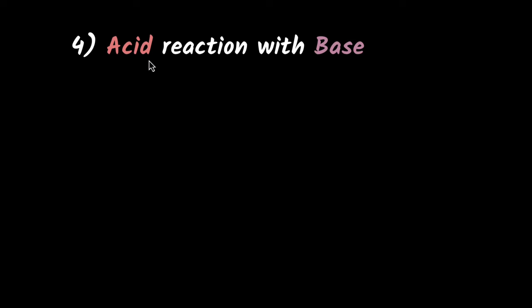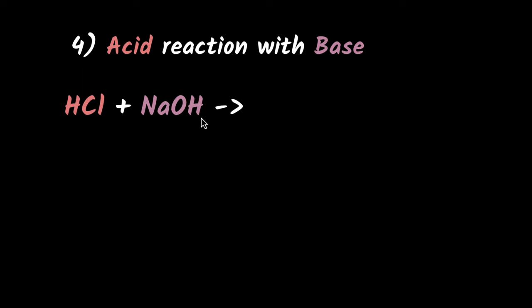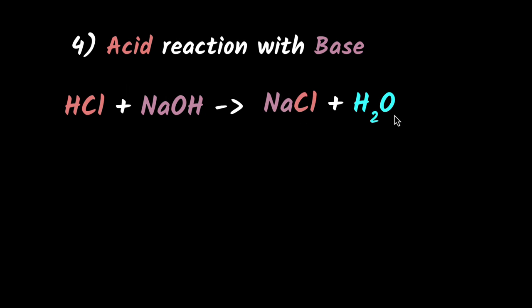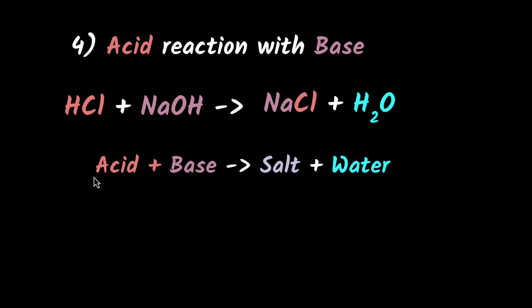That brings us to the fourth and final one: how does acid react with base? If you have hydrochloric acid reacting with NaOH, this is like the perfect reaction for them. Acids give you H+ ions, and sodium hydroxide — the base — is an H+ acceptor. So it's going to donate its H+, and that OH is going to accept that H to give you H₂O, while Na combines with Cl to give you NaCl. So you get NaCl plus H₂O. We call this a neutralization reaction.